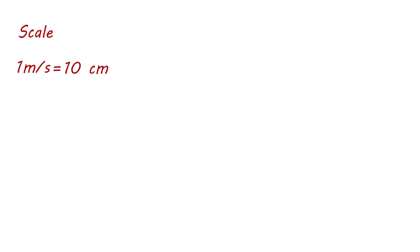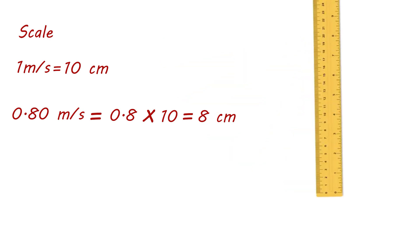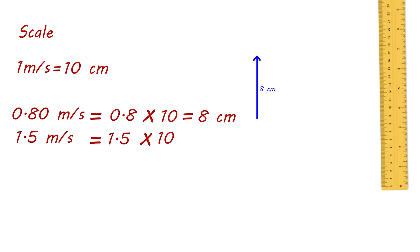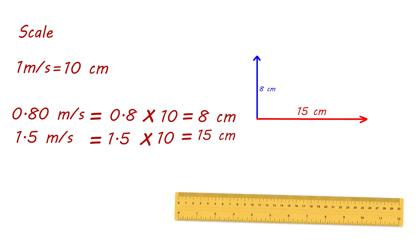To achieve this, we adapt a scale. We will consider that every 1 meter per second is equivalent to 10 centimeters on the graph. Therefore, the velocity of 0.80 meters per second is equivalent to 0.8 times 10, which equals 8 centimeters. So the velocity of 0.8 meters per second will be represented by an 8-centimeter line on the graph. For the horizontal velocity of 1.5 meters per second, it is equivalent to 1.5 times 10, which equals 15 centimeters.